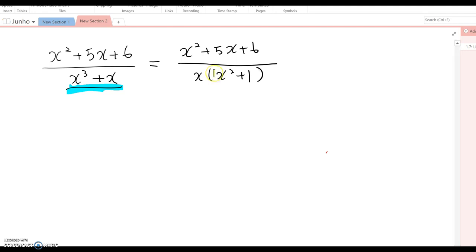Then now we need to make partial fraction based on denominator x and based on denominator x squared plus 1. So this one becomes A over x plus...